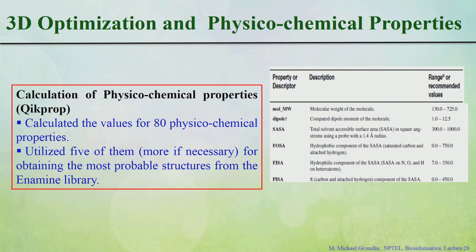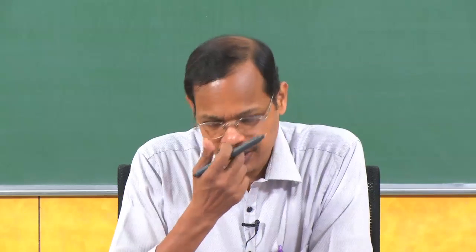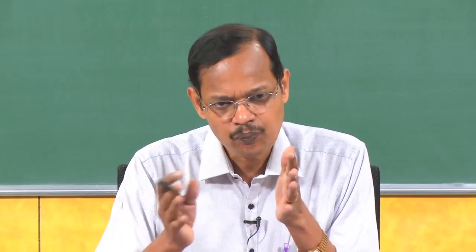Once ligands are prepared, we calculate their physicochemical properties. Using a program like QikProp, more than 80 physicochemical properties can be calculated — for example, molecular weight, dipole moment, accessible surface area, hydrophobic and hydrophilic surface area components, and so on. Among all these properties, we select the most important ones for binding, such as hydrogen bonds, log P, and molecular weight, taking 5 or more properties depending on their importance for binding with the target.